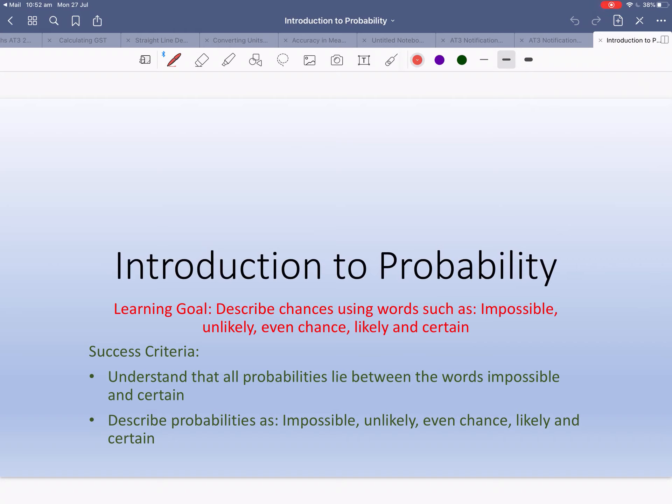We're going to look at an introduction to probability. It's something that you've come across in previous years, but now we're going to look at words like impossible, unlikely, even chance, likely and certain.